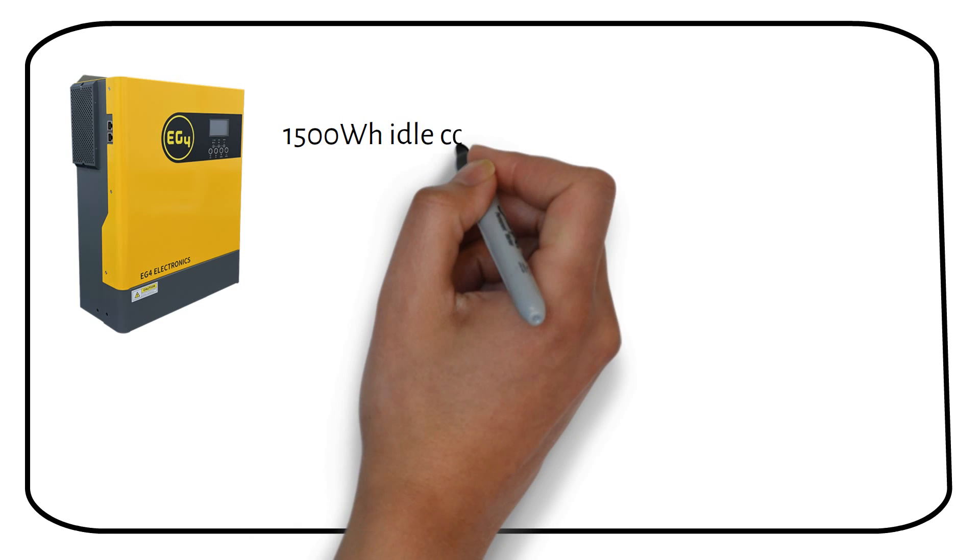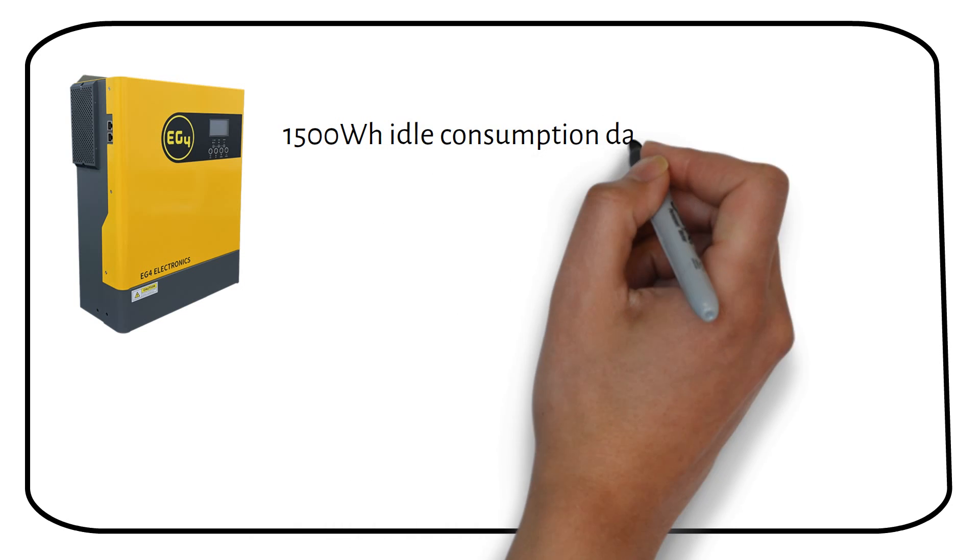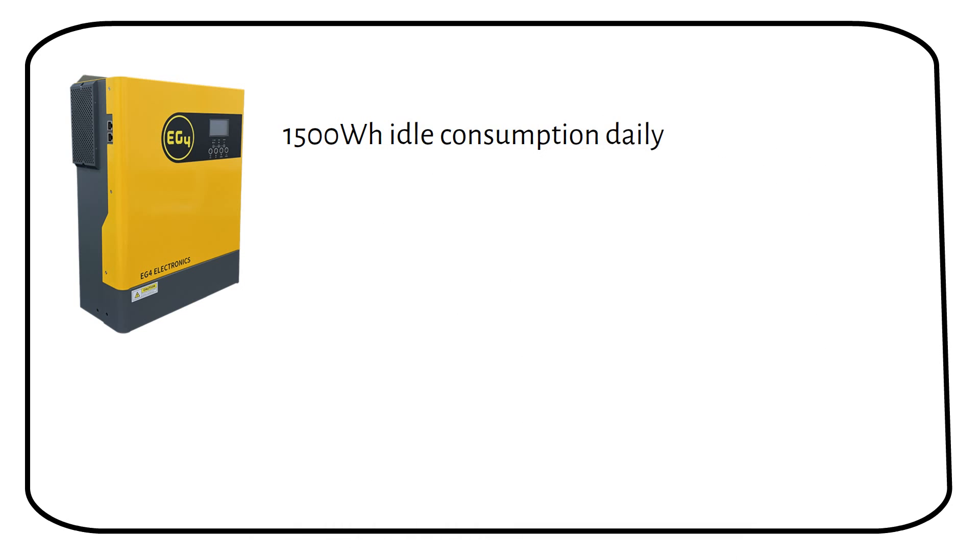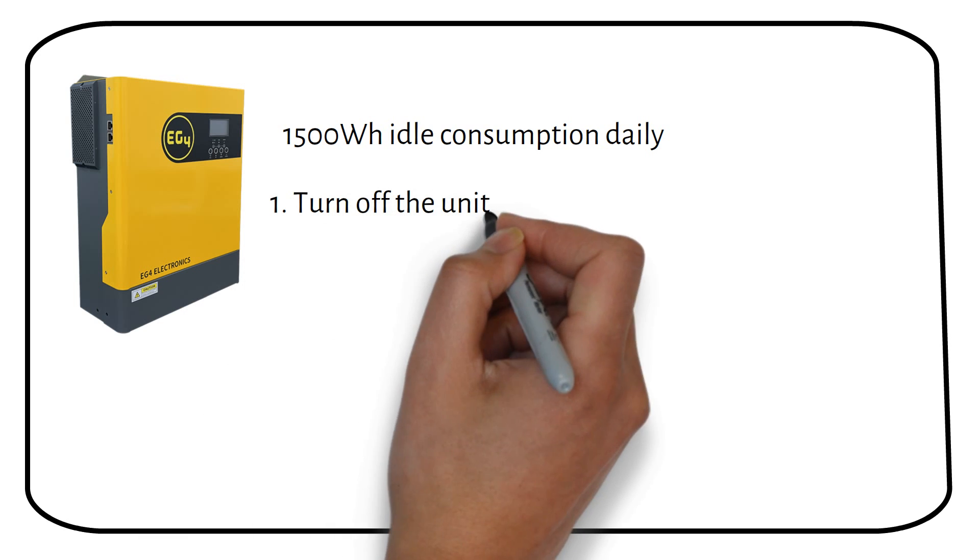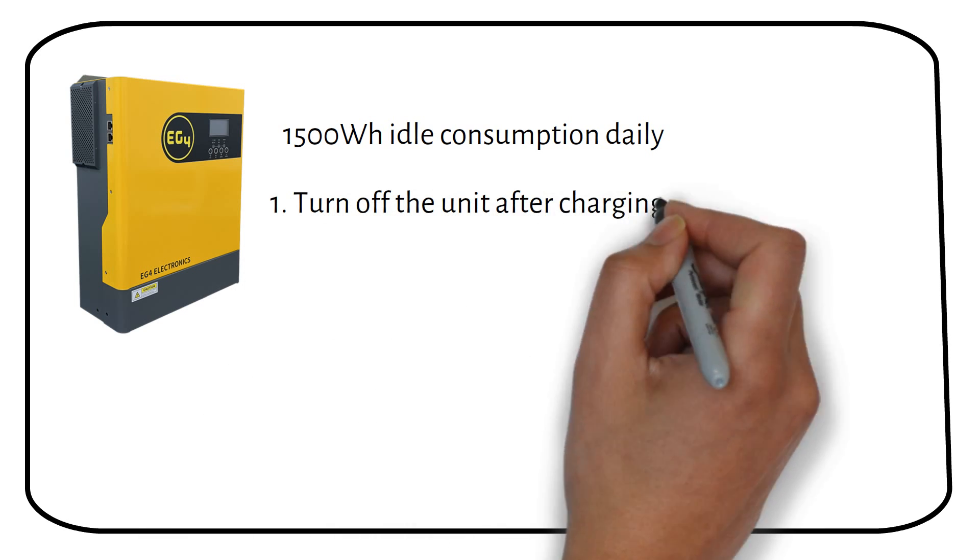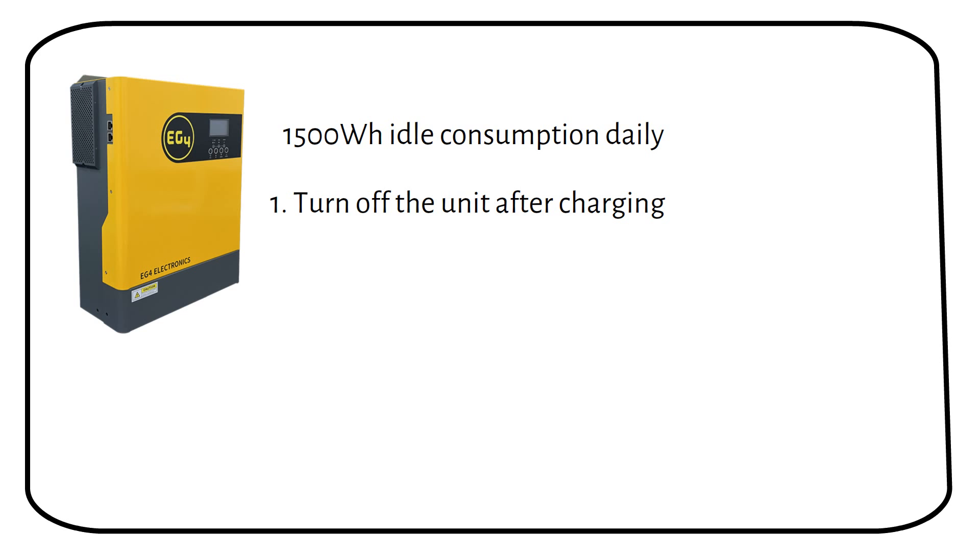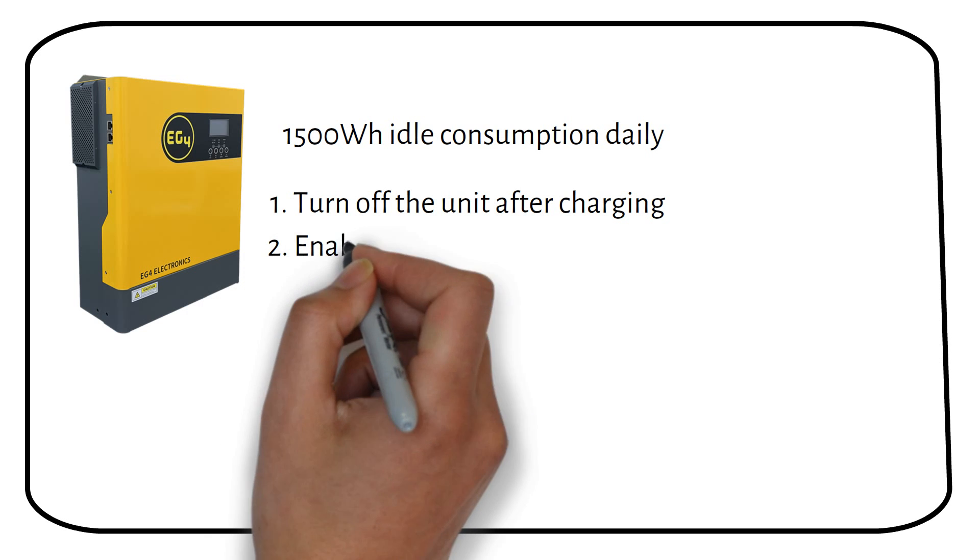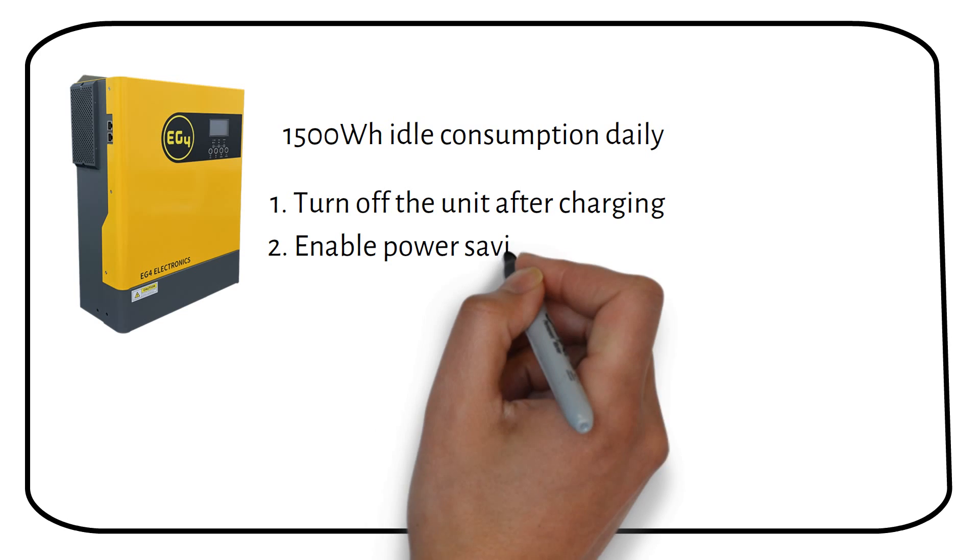Don't forget that the idle consumption of this hybrid inverter will be about 1,500 watt hours per day. You can reduce the consumption by turning off the unit after charging, and it will still charge the batteries with the MPPT. You can also enable power saving mode, which is disabled by default.